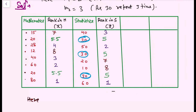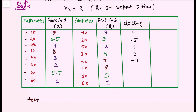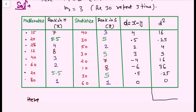After ranking, we find d, the difference between ranks (x − y): 7−3=4, 5.5−5=0.5, 4−2=2, 8−5=3, 3−7=−4, 2−8=−6, 0.5 values, and 1−1=0. Then d² values are: 16, 0.25, 4, 9, 16, 36, 0.25, 0. Adding all these gives Σd² = 81.5.